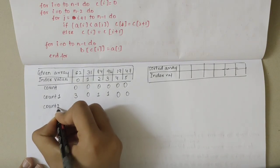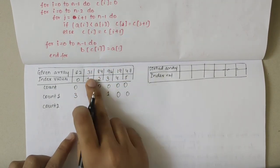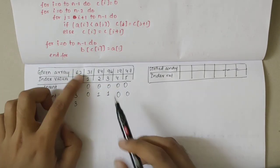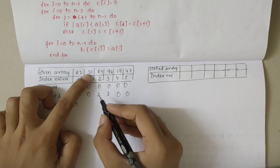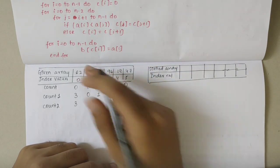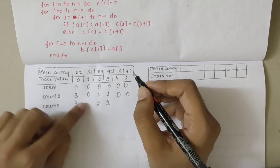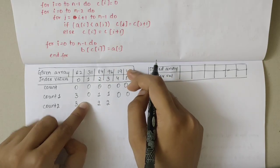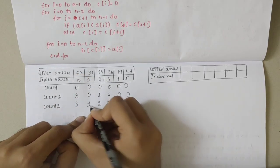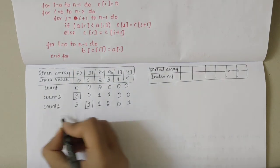Now we increment to count step 2, moving to element 31. 31 is not greater than 62, so we copy the previous count as is. 31 is not greater than 84, so we add 1 to 84's count, making it 2. 96 is greater than 31, so we increment that. 19 is greater than 31, so we add 1 there. 31 is not greater than 47, so we add 1 to 47's position, giving 0 for 31 and 1 for 47.